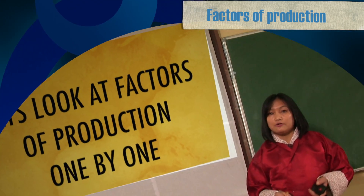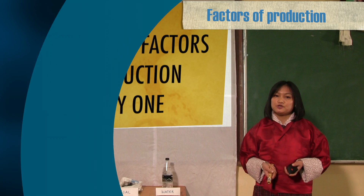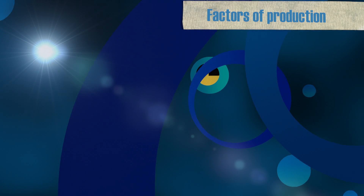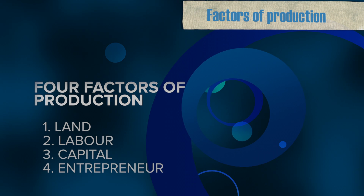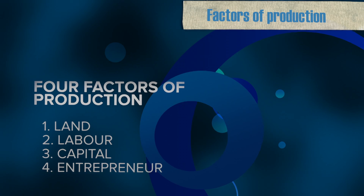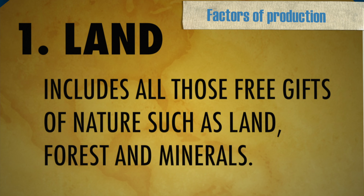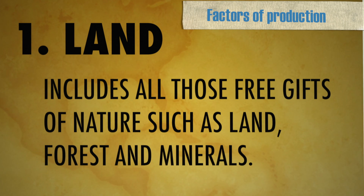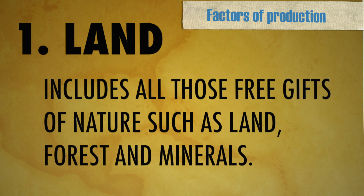Now we are going to discuss the factors of production one by one. In economics, there are four factors of production: land, labor, capital, and entrepreneur. Now we are going to discuss land. Land includes all those free gifts of nature, such as land, forest, and minerals. This factor of production is inelastic in nature.